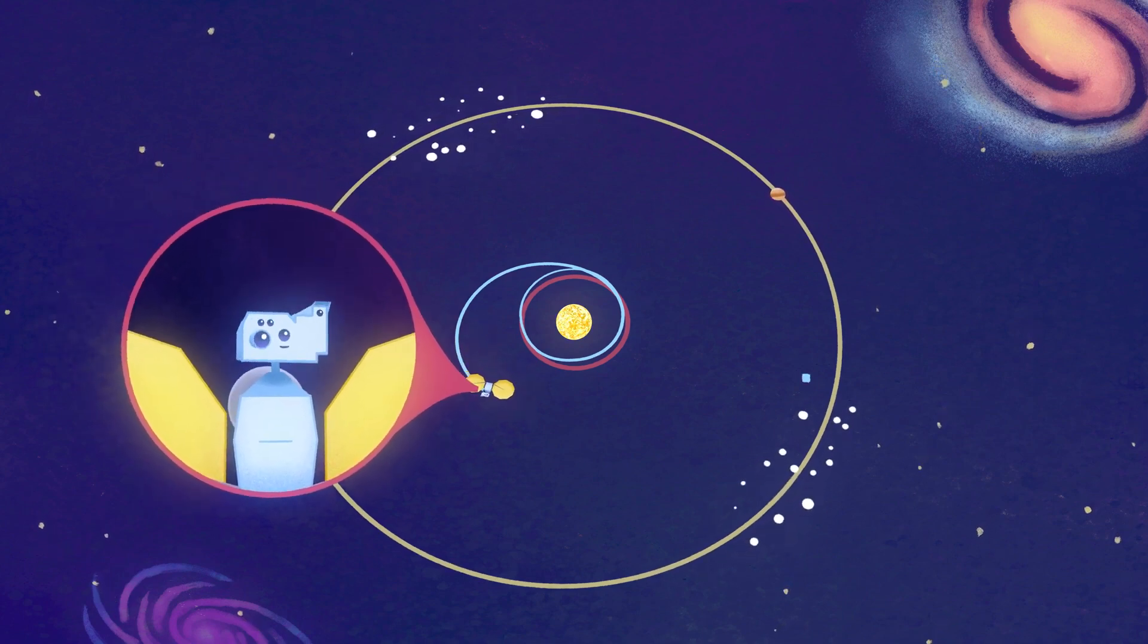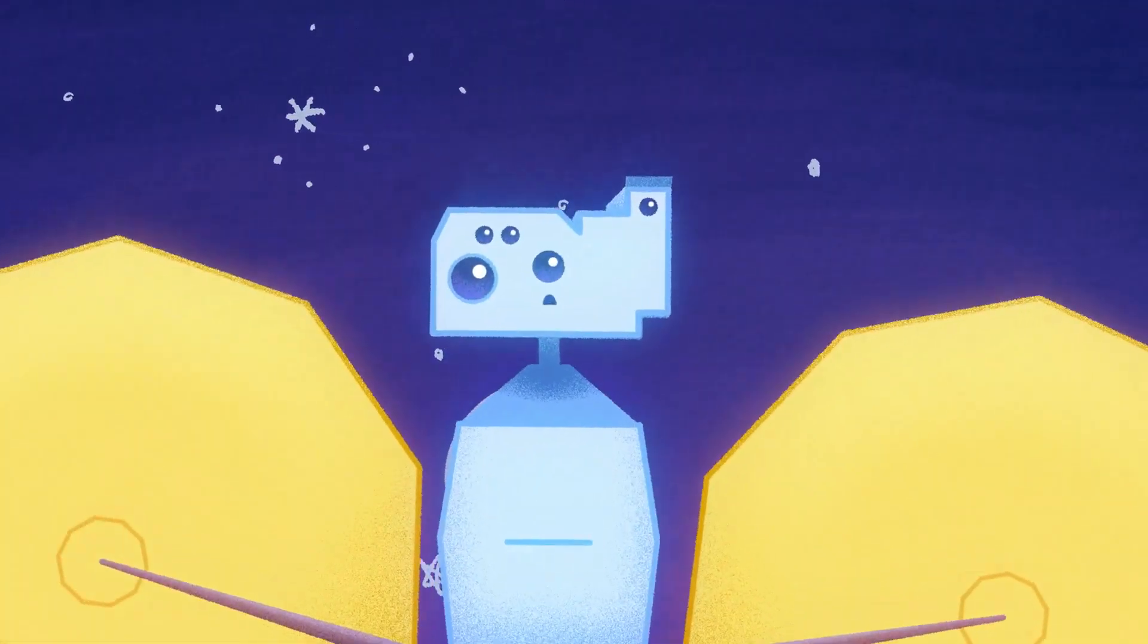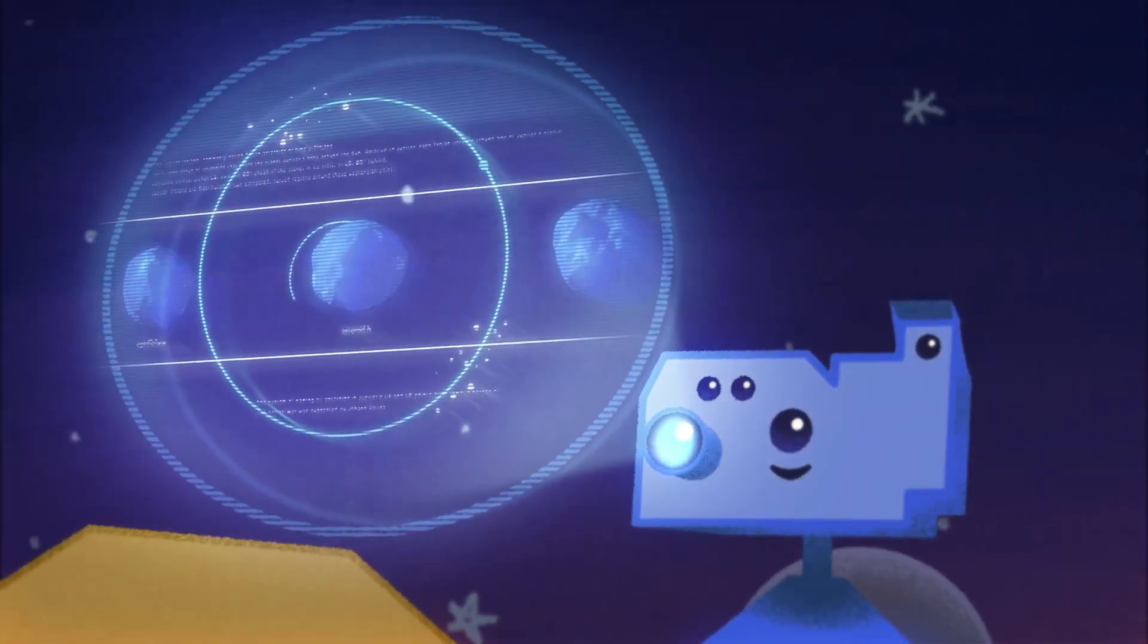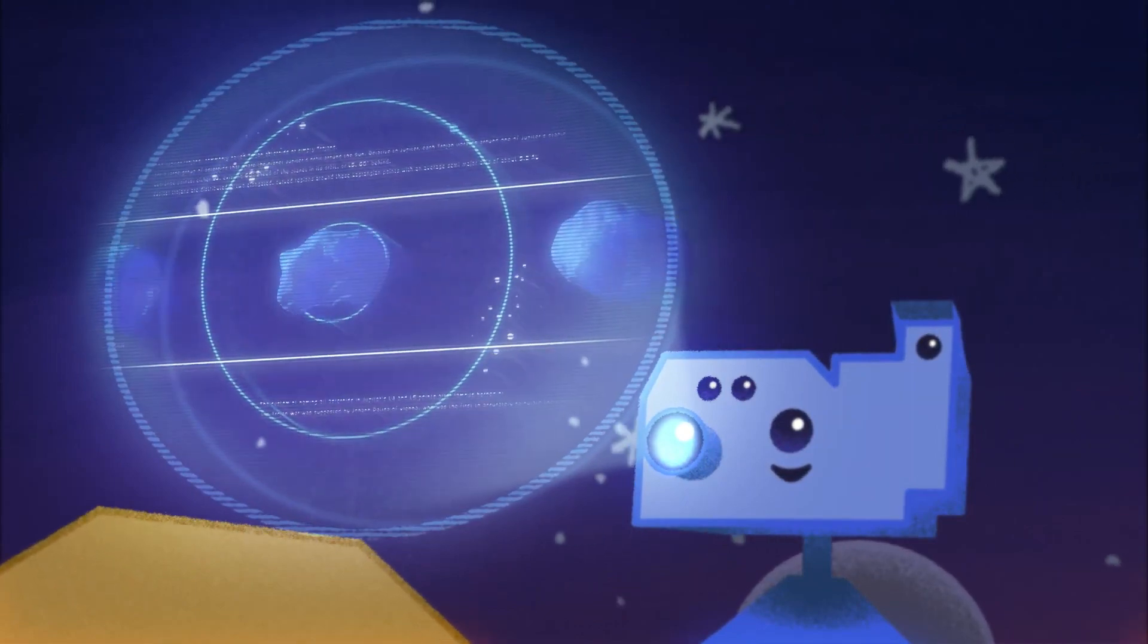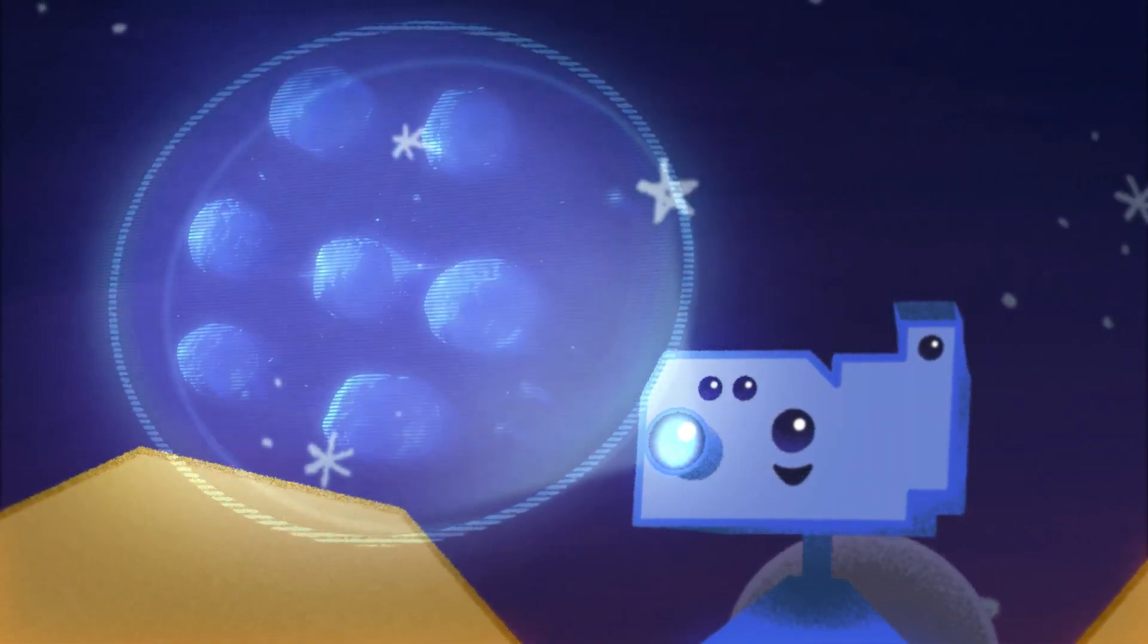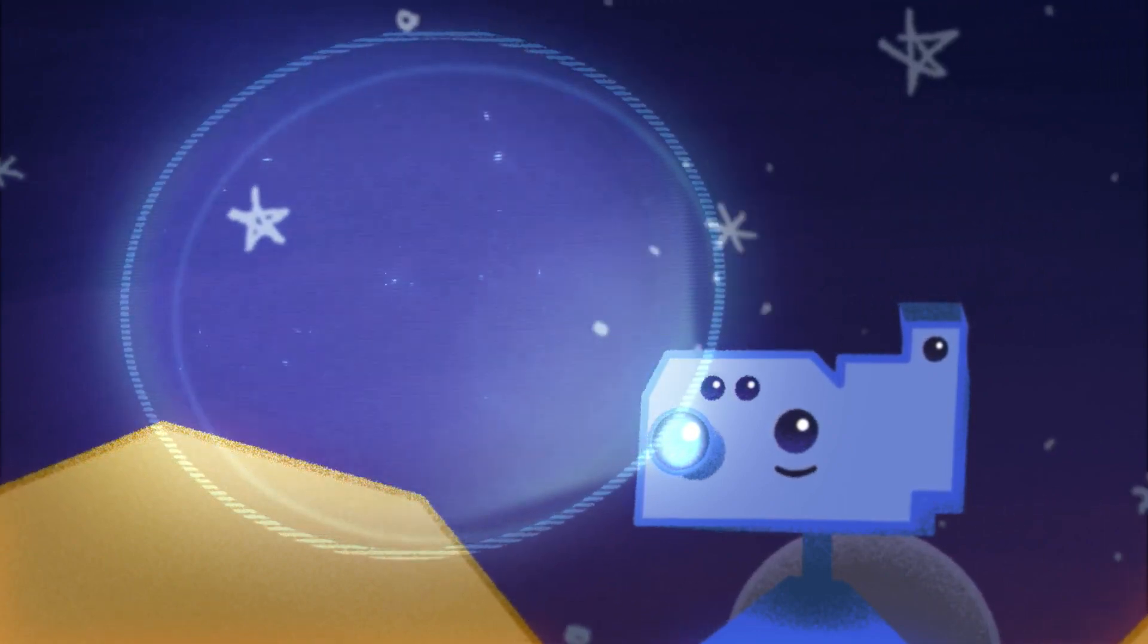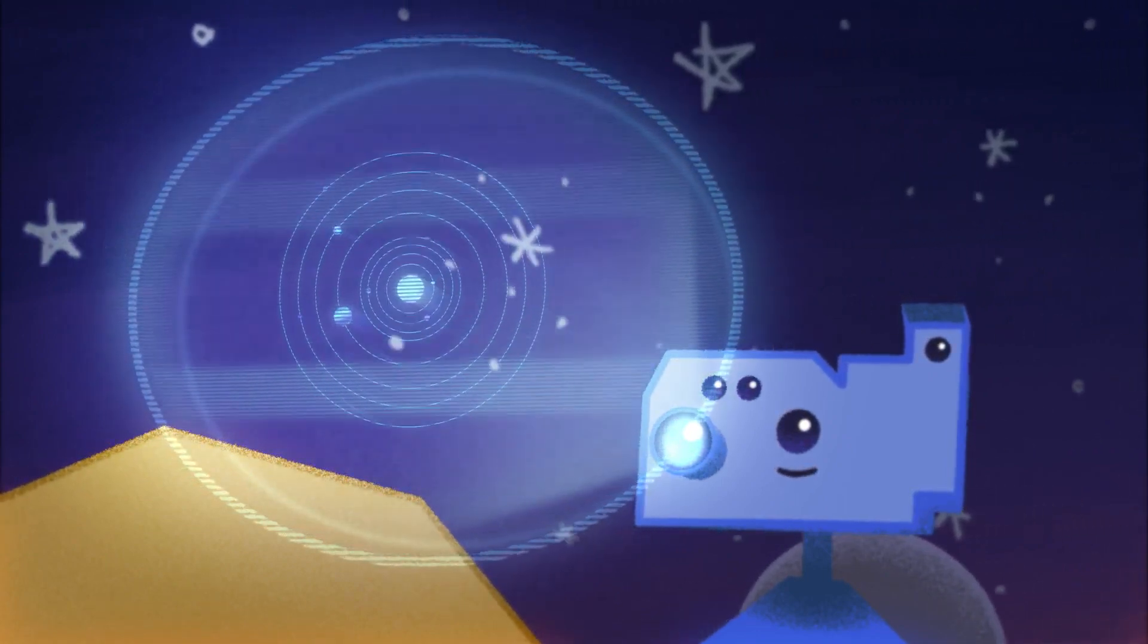These Trojan asteroids are remnants from planetary formation. Sometimes we'll call them the fossils of solar system formation. Their near neighbors might have gone into forming the giant planets. These objects then became captured in their locations today, and so in that way we can look and see what went into forming the planets in our solar system.